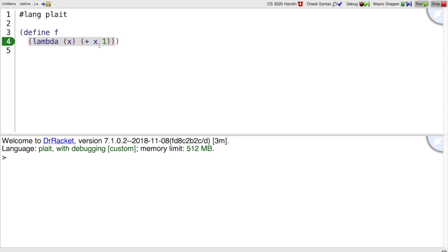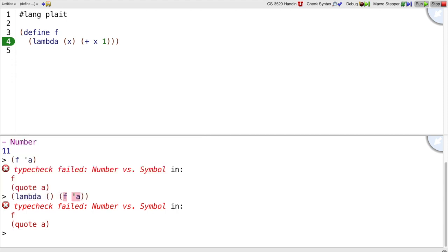So here's a lambda that takes an x, does x plus one. I can call f with a number like 10. I cannot call it with a symbol like quote a, not even if I delay the evaluation. So here I would call f on a if that lambda were ever called, but it isn't. Still the type checker rejects it.